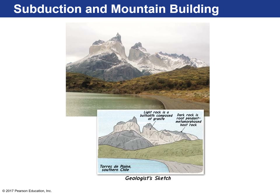This is Torres del Paine in southern Chile — a really inaccessible but exceptionally beautiful area. This white area is a granite batholith exposed at the Earth's surface, and above it is a roof pendant of metamorphosed host rock that was above the batholith's intrusion. It crystallized deep underground, and through uplift, erosion, and sculpting by glaciers, it has left behind this absolutely stunning landscape.